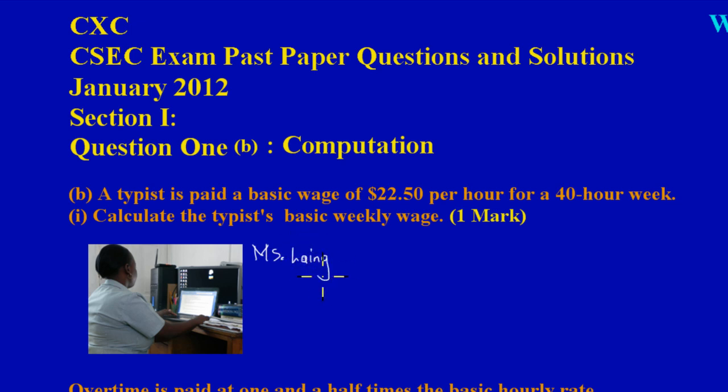We are asked to calculate Miss Lang's, or the typist's, basic weekly wage. That's an easy one mark. If she works $22.50 per hour, so for each hour she works $22.50, and she works a total of 40 hours for the week, then basically this is 40 sets of $22.50. Hope that makes sense for you guys.